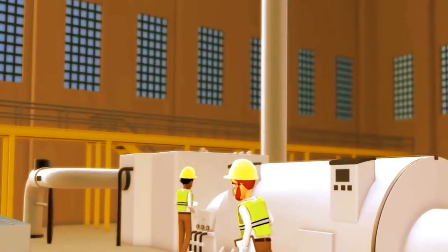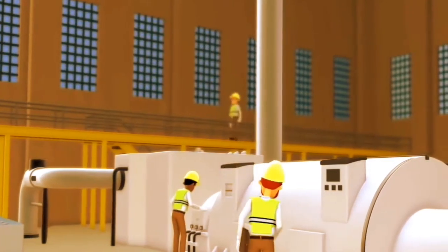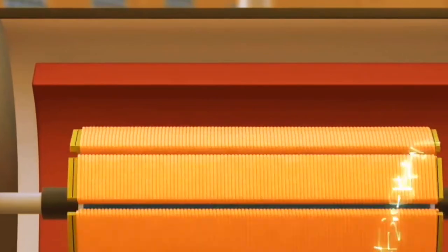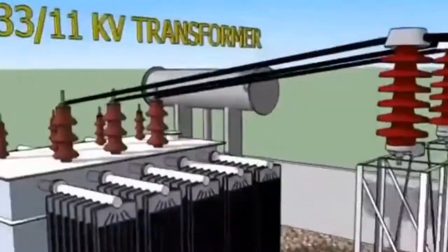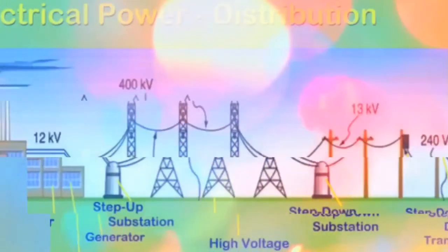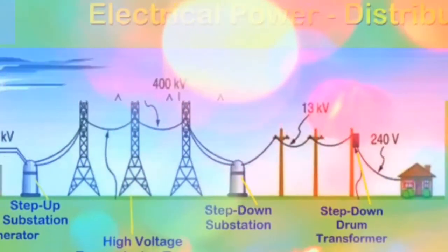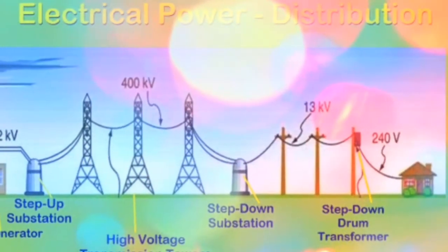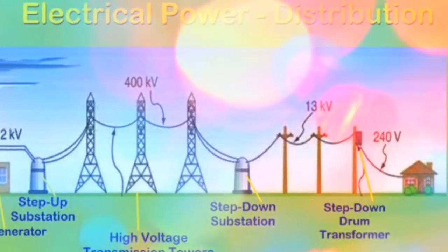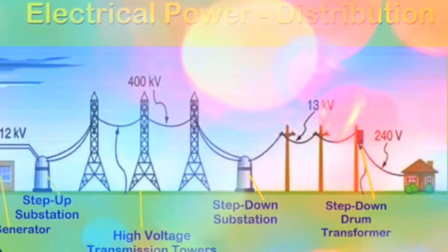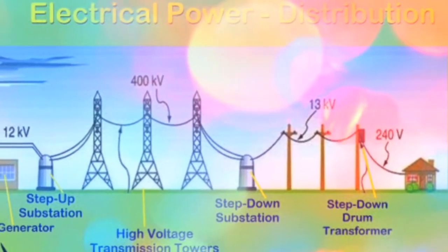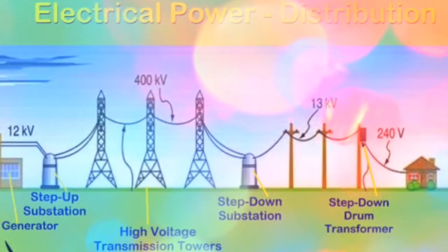After the generation, they transmit the power at high voltages by using step-up transformers in generating substations. The power is transmitted at high voltages, 400kV and above, through high voltage transmission lines and towers.